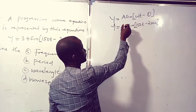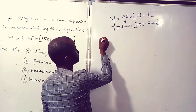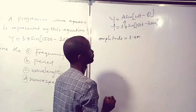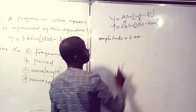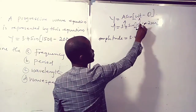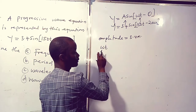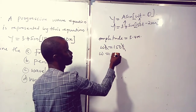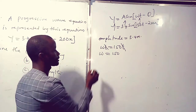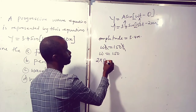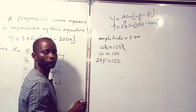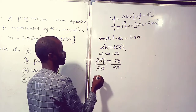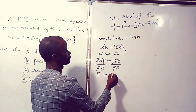Now, matching y with y, the amplitude equals 3.4 meters. And then angular frequency is 150. Taking ωt equal to 150t, t matches t, so angular frequency ω equals 150. Remember that angular frequency is given as 2πf. That is 2πf equals 150. Making f the subject, we have f equal to 75 over π, which equals approximately 23.78 Hz.